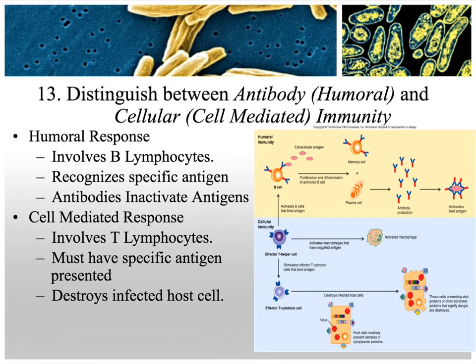The antibody or humoral response deals with extracellular threats — things in the blood or lymph. It requires B cells, which make antibodies that inactivate antigens. The cell-mediated response, where 'cell' is the key word, is for intracellular threats and involves T cells. When infected cells present antigens, the T cell binds to it, and a killer T cell injects perforin to destroy the infected host cell — not just the antigen but the entire infected cell.